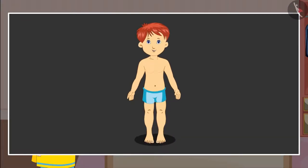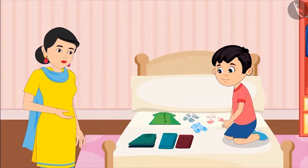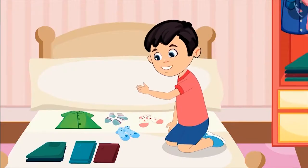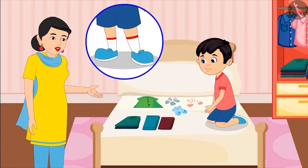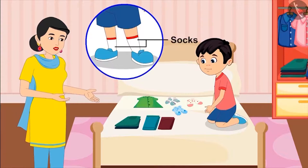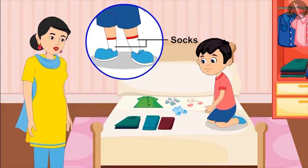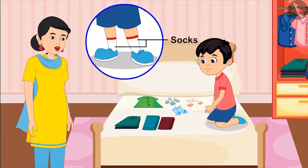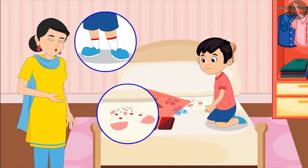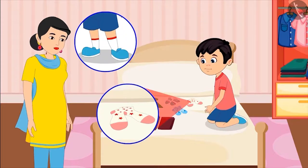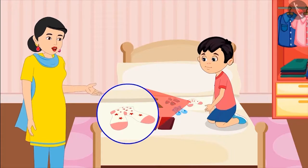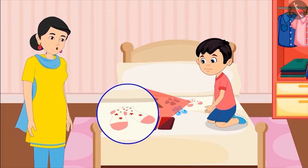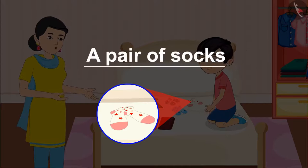So this way we have a pair of eyes as well. Right, Mom? Yes, son. You got it right. Mom, what does a pair of socks mean? We have two legs, and we wear one sock on each leg. On both feet, we wear identical socks, such as these two socks with stars. Yes, because we wear these two socks with stars together on each leg, and that is how they form a pair of socks.